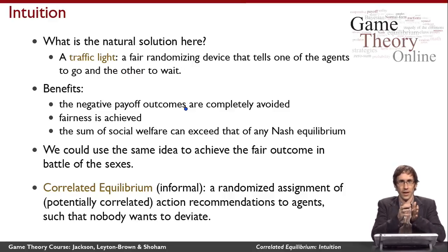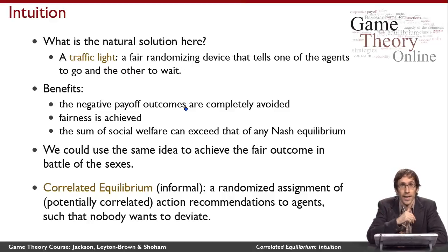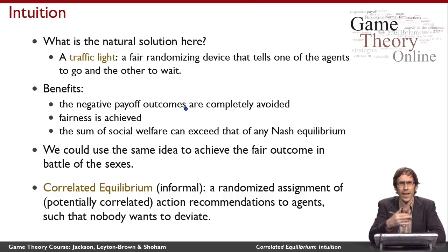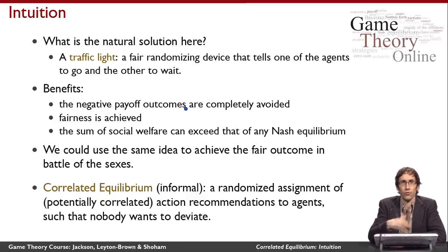A randomizing device tells me B some of the time and F some of the time, and in a potentially correlated way tells you B or F as well. Flipping a coin where heads means we both get recommendation B and tails means we both get recommendation F is one such device. The coin doesn't compel us — we still freely decide how to interpret the recommendation. But it's a correlated equilibrium if neither of us would want to deviate. In Battle of the Sexes, neither would deviate because deviating while the other follows the recommendation yields a payoff of zero instead of a positive payoff. So a correlated equilibrium is any randomized assignment of possibly correlated action recommendations that leaves nobody wanting to deviate.